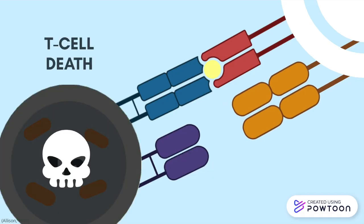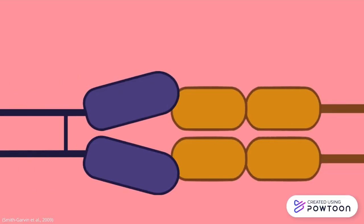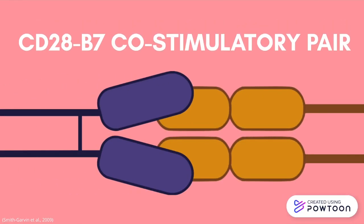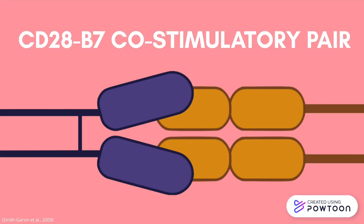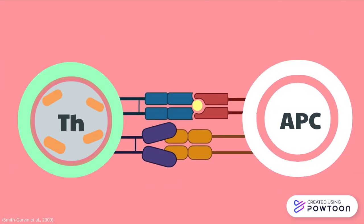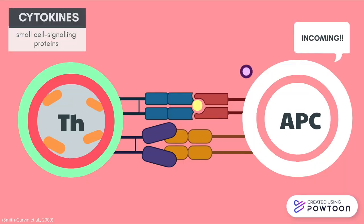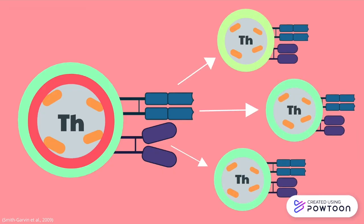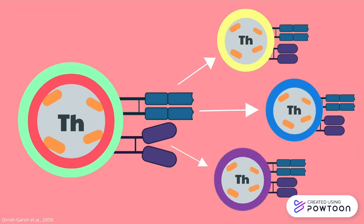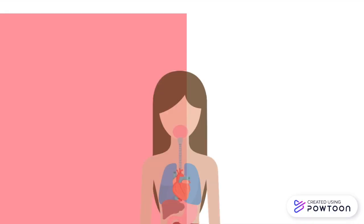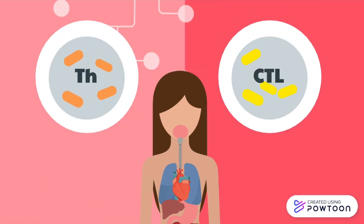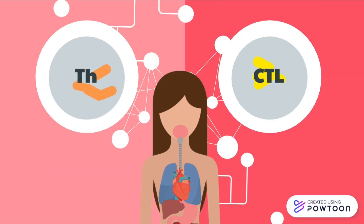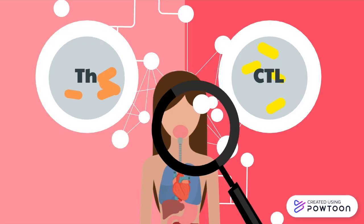Binding to B7 results in T-cell activation, whereas a lack of binding results in cell death. Thanks to the co-stimulatory CD28-B7 pair, the T-cell is officially activated, and the APC secretes cytokines that signal the T-cell to destroy the antigen, rapidly multiply, and begin differentiation. This was a simplified explanation of just two cells within the vast network of our immune system — we encourage you to uncover more of its mysteries.